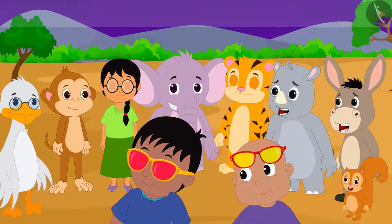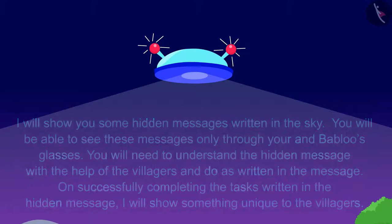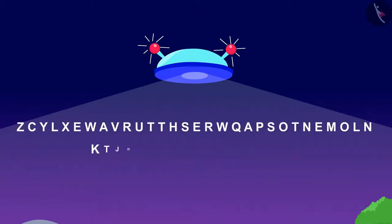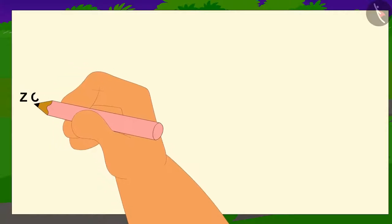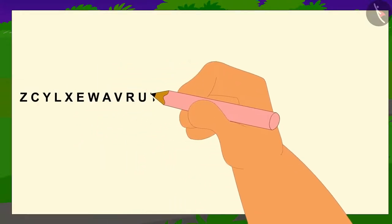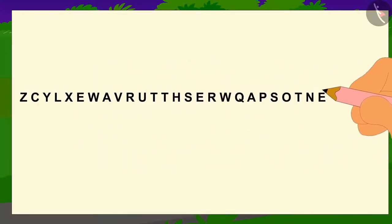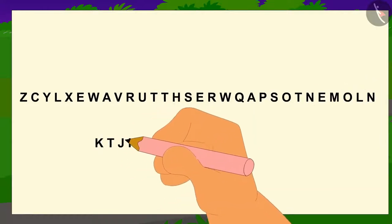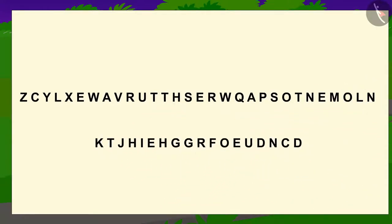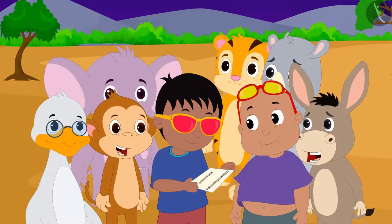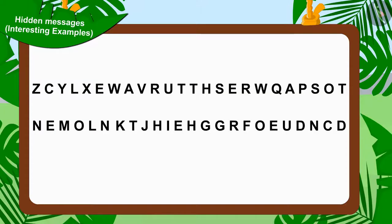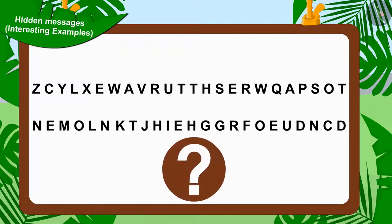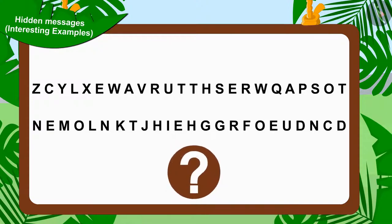After the message was completed, it disappeared and a new hidden message appeared in its place. Raju wrote the first hidden message on a piece of paper and showed it to the villagers. All the villagers got together to solve it. Children, can you solve this hidden message? If you wish to, you can stop the video and find the answer.